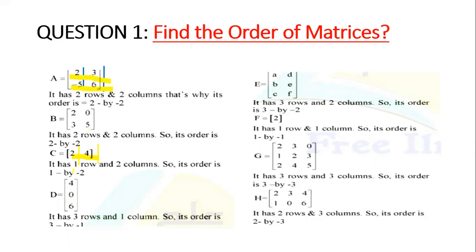Now in this case, I have 4, 0, 6. This is part D. D equals this matrix. So in this case, I have column 1 and rows 1, 2, and 3. So the order will be 3×1.